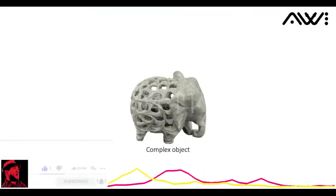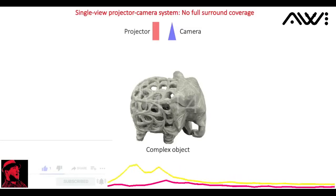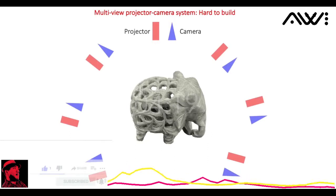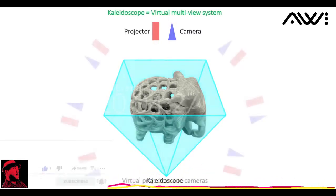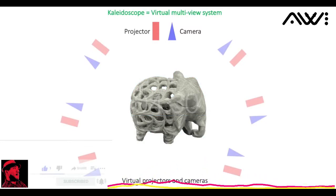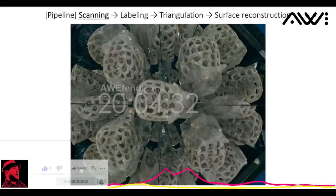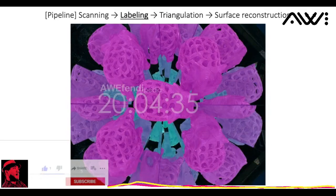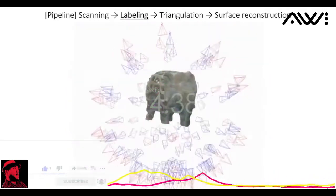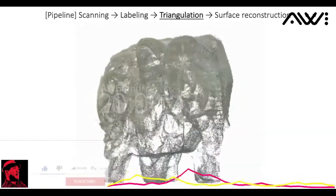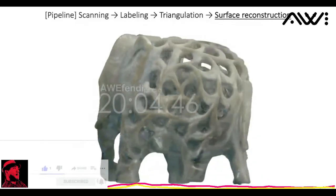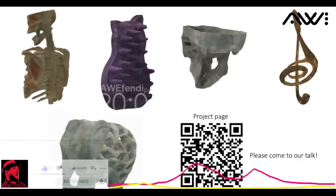How can we scan this complex object? A single viewpoint is not enough for full surround coverage. A multi-view projector camera system is hard to build. Instead, we put the object in a kaleidoscope. This is equivalent to a virtual multi-view system. Our pipeline scans the object and labels the virtual viewpoints of each pixel. Now this is equivalent to a light stage with hundreds of virtual projectors and cameras. So we can reconstruct a point cloud and a mesh. To see more scan shapes, please come to our talk.